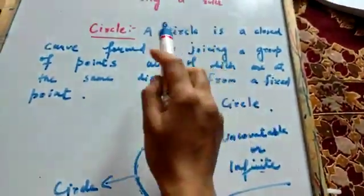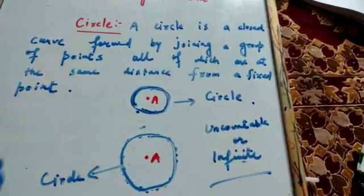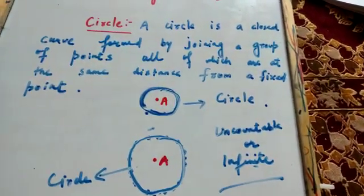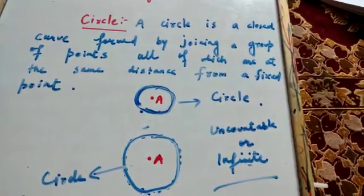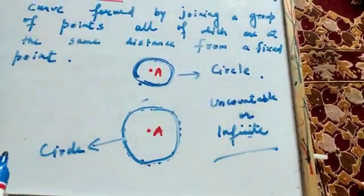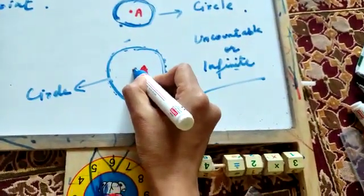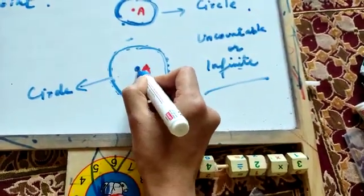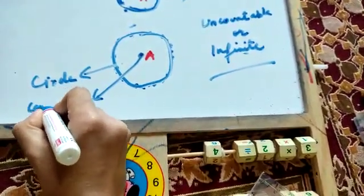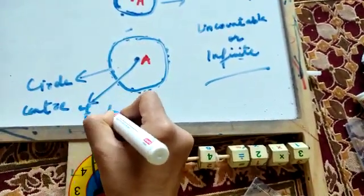So here is the definition of circle: A circle is a closed curve formed by joining a group of points, all of which are at the same distance from a fixed point. This fixed point — what do we call it? We call it the center of the circle.